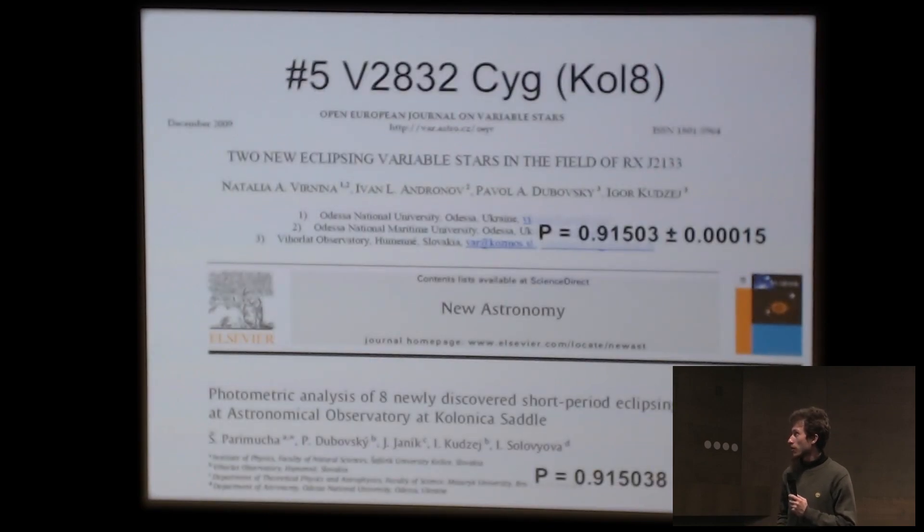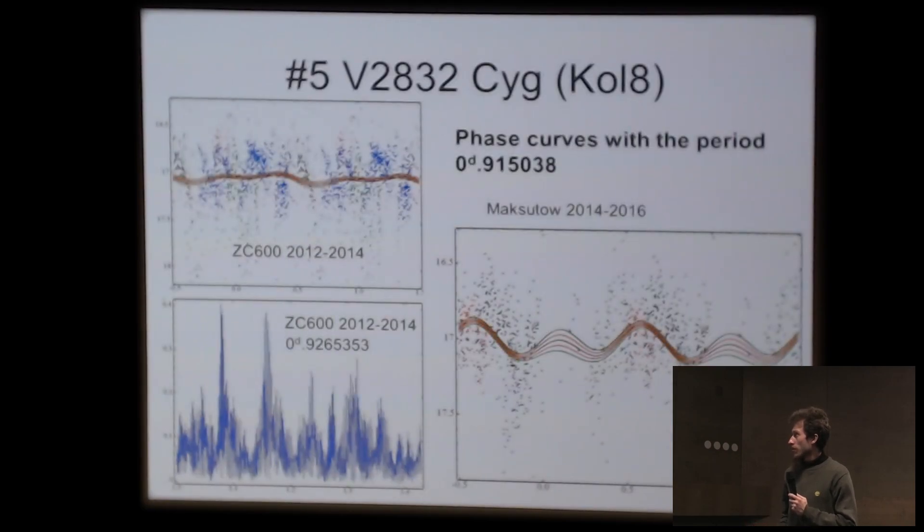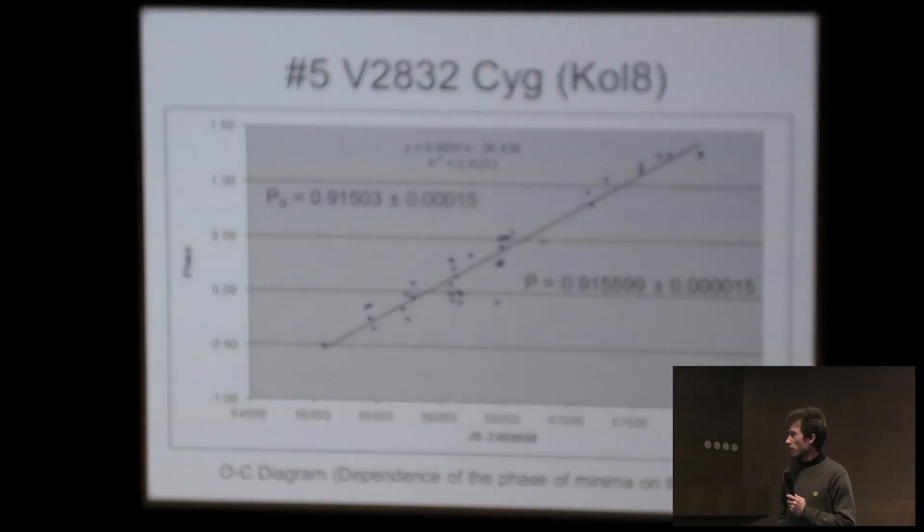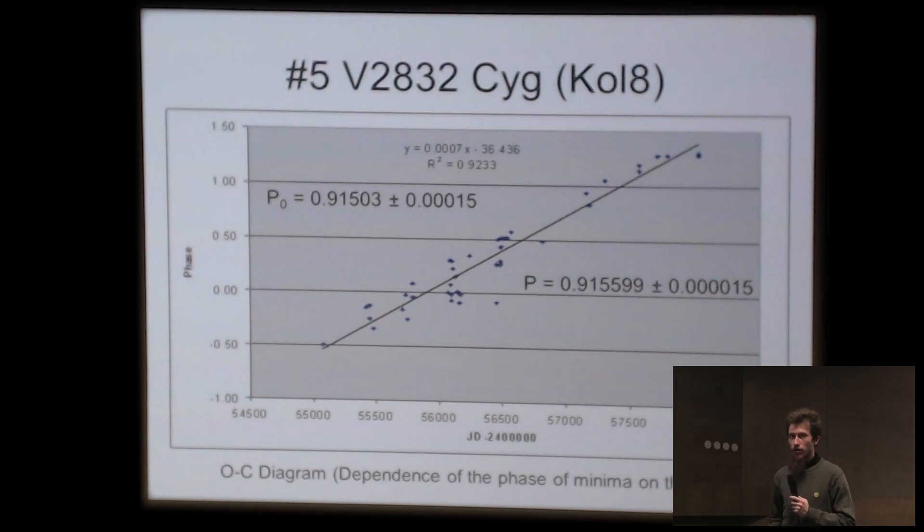The next object is V2832 Cygni. It's similar, it's also an EW system. Our light curves were not very good, but from one average orbital minima per season or few per seasons, we still got good enough quality of the measurements on the O-C diagram. And we also corrected the value of the period.